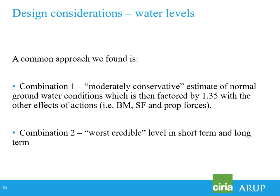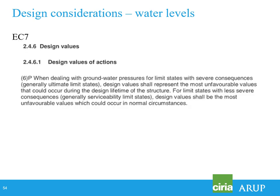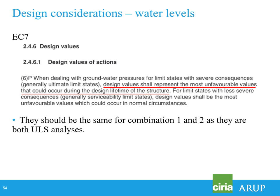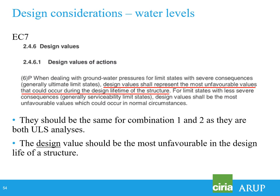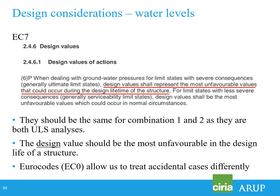A common approach for Combination 1 is to use a moderately conservative estimate of normal groundwater conditions, factored by 1.35 on the effects of actions, and in Combination 2 the worst credible water level for short and long term. But strictly, since both combinations are ULS cases, the water level value should probably be the same in both. Eurocode 0 allows accidental cases to be treated with partial factors of unity on all parameters and designed as a worst-case scenario.